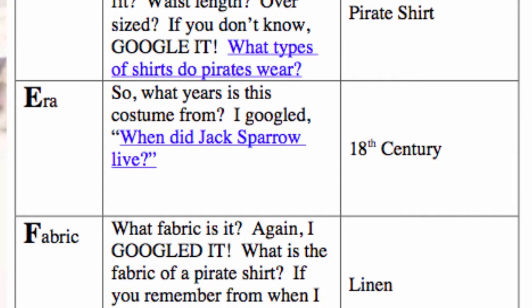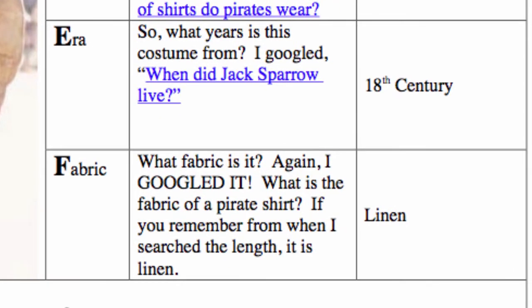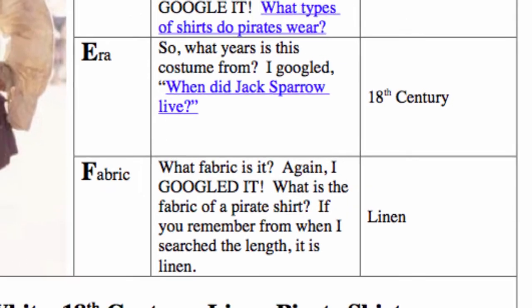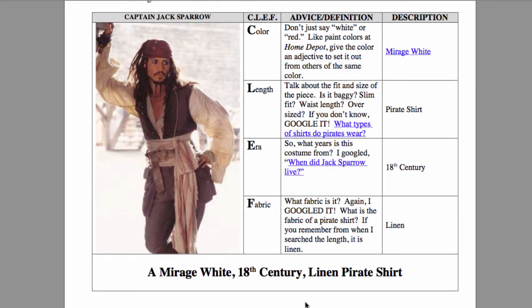Next, we want to do the era—the years the costume is from. For this particular Johnny Depp picture, I Googled when did Jack Sparrow live, and it turned out the Pirates of the Caribbean movies took place in the 18th century. So we now know it's a Mirage White pirate shirt from the 18th century. Finally, we want to do the type of fabric it's made of—what fabric is a pirate shirt? I Googled it and it's linen. So we put this all together to make a Mirage White 18th century linen pirate shirt. That's CLEF: the color, the length, the era, and the fabric. You want to do that for every costume you create.